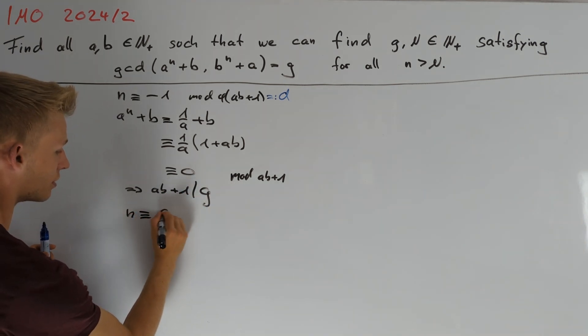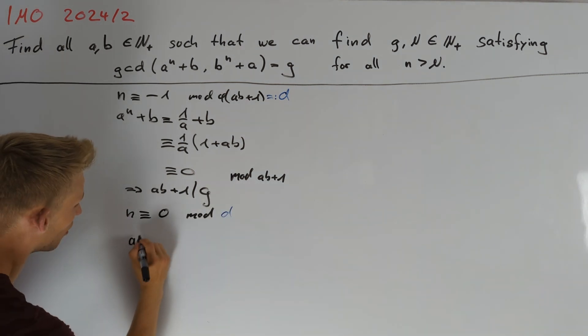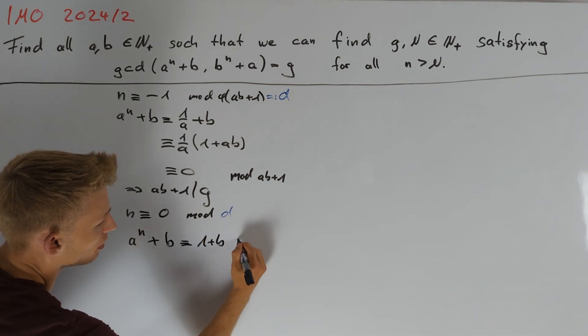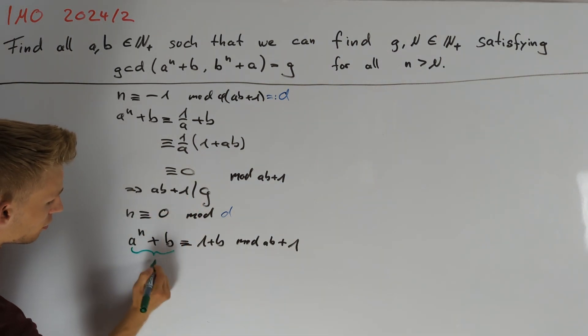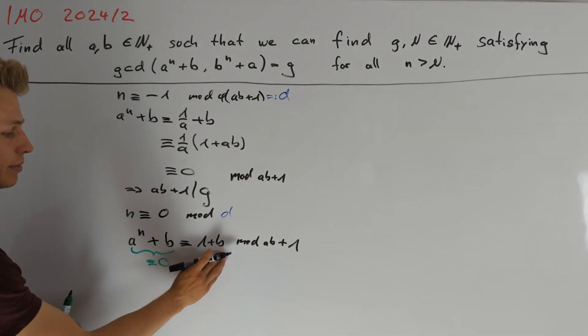Taking n congruent to 0 modulo d, we get a to the power of n plus b is congruent to 1 plus b modulo ab plus 1. For n large enough, the left hand side is divisible by g, so this is congruent to 0.